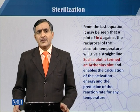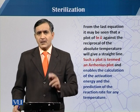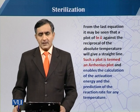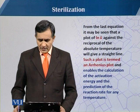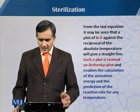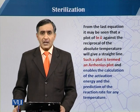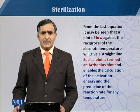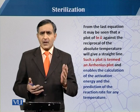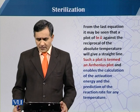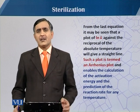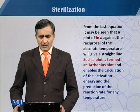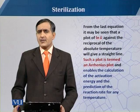A plot between the reciprocal of the temperature and the natural logarithm of the rate constant is known as the Arrhenius plot, and it gives a straight line. This enables calculation of the activation energy and prediction of the reaction rate. By plotting these two, we can estimate the temperature at which we can achieve suitable sterilization of the fermentation medium.